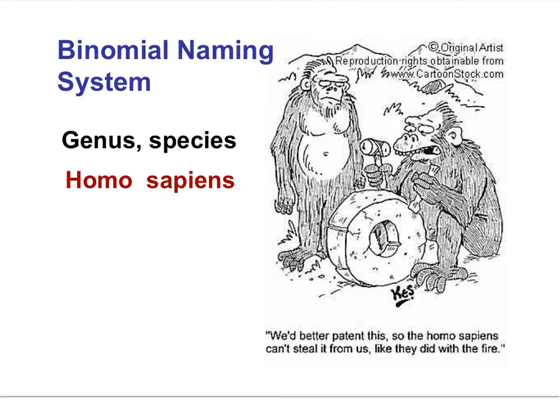The seven taxa are: kingdom, phylum, class, order, family, genus, species. The genus and species names provide the specificity required when biologists communicate about species.